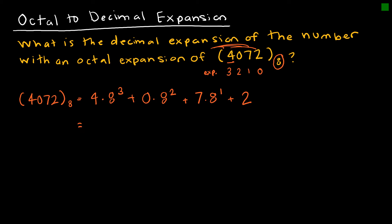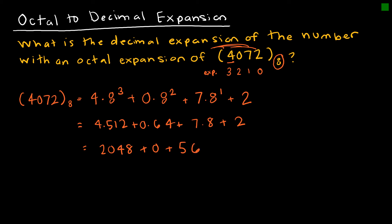Working that out: 4 times 512, plus 0 times 64, plus 7 times 8, plus 2, which gives 2048 plus 0 plus 56 plus 2. My final answer is 2106. This is base 10, so it's fine to label it base 10, but it's equally acceptable to just write 2106 as we normally would, since base 10 is the default.